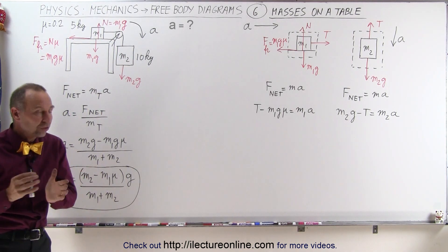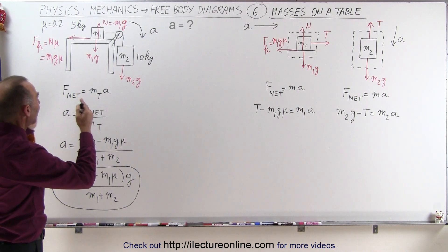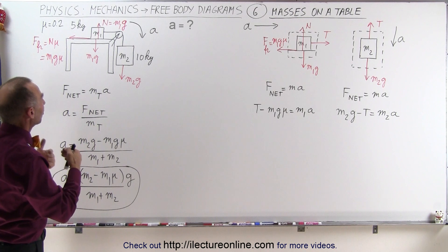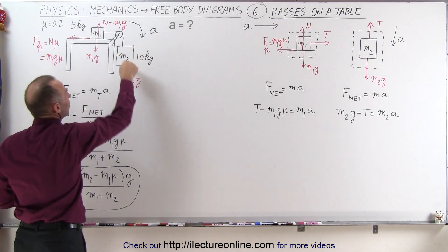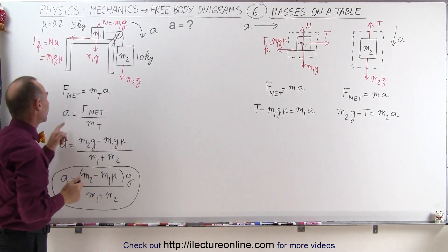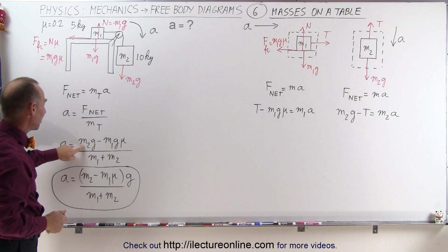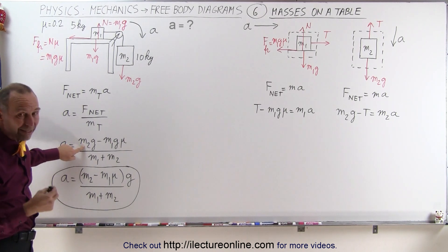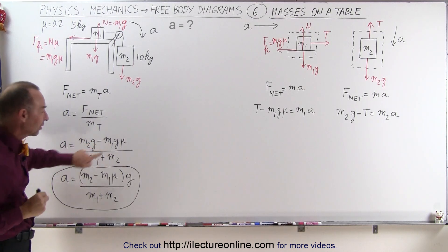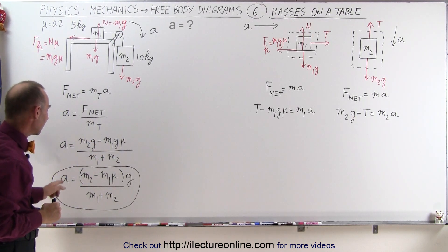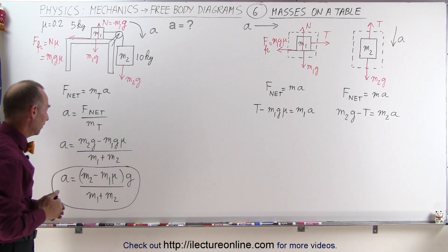To solve this as a whole system, we simply look at all the forces that act in the same direction as acceleration, and all the forces that act in the opposite direction of the acceleration. The acceleration is the net force divided by the total mass — the force aiding the acceleration minus the force opposing it, divided by the total mass. When we factor out a g, we have the equation for the acceleration of the whole system.